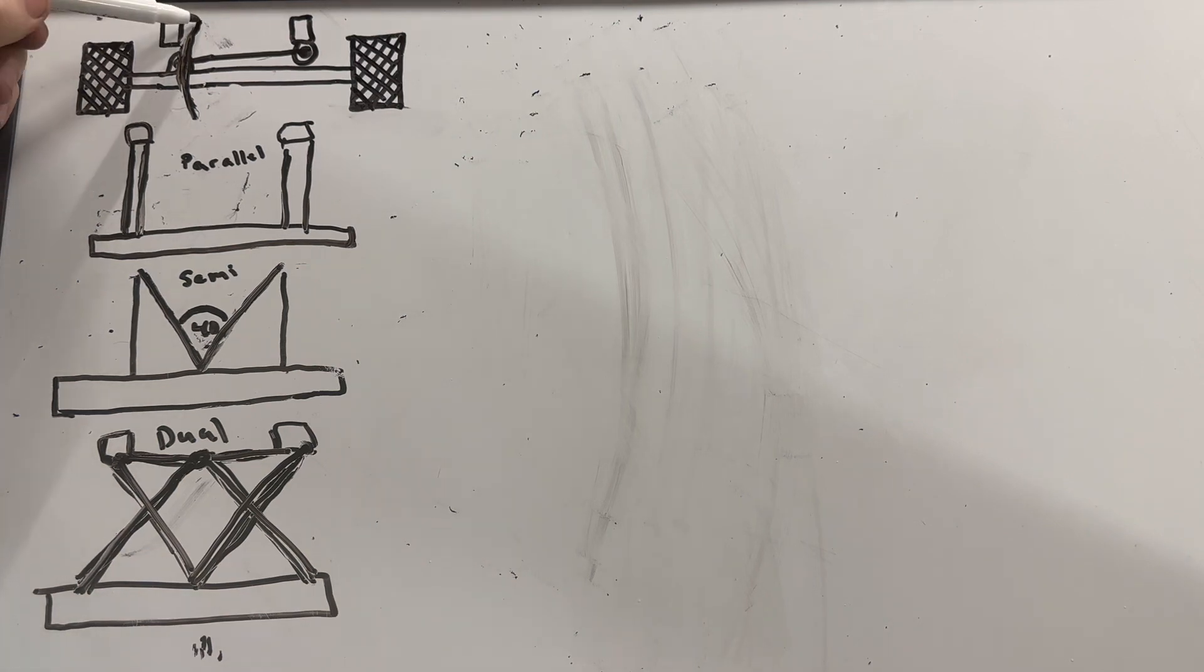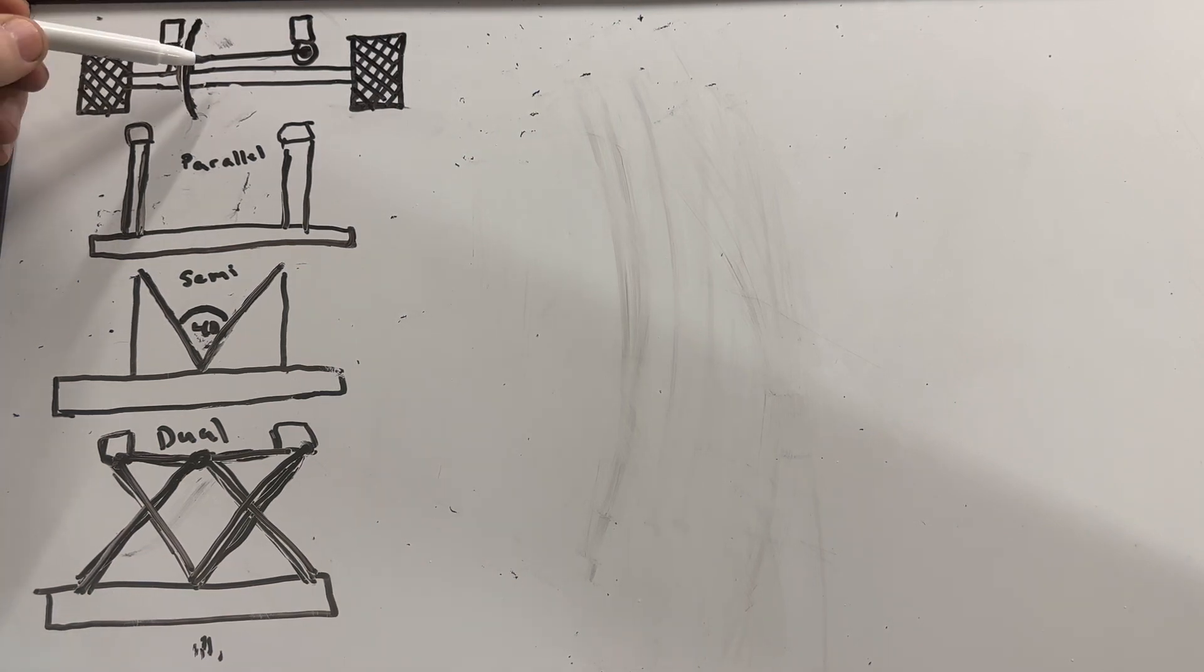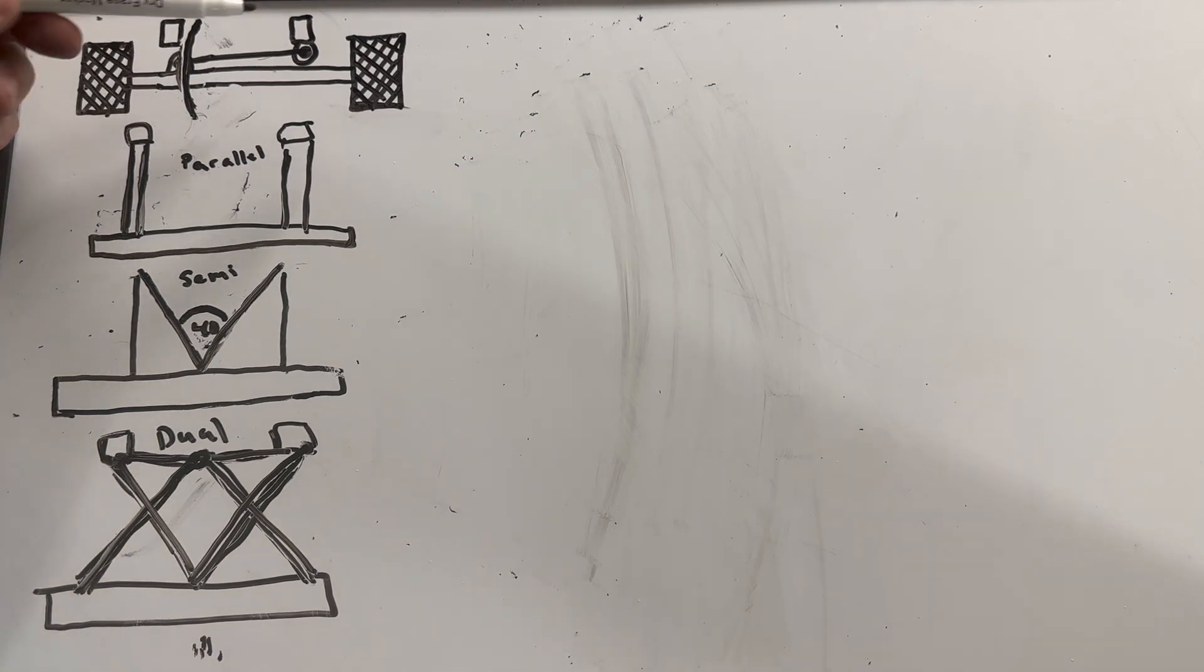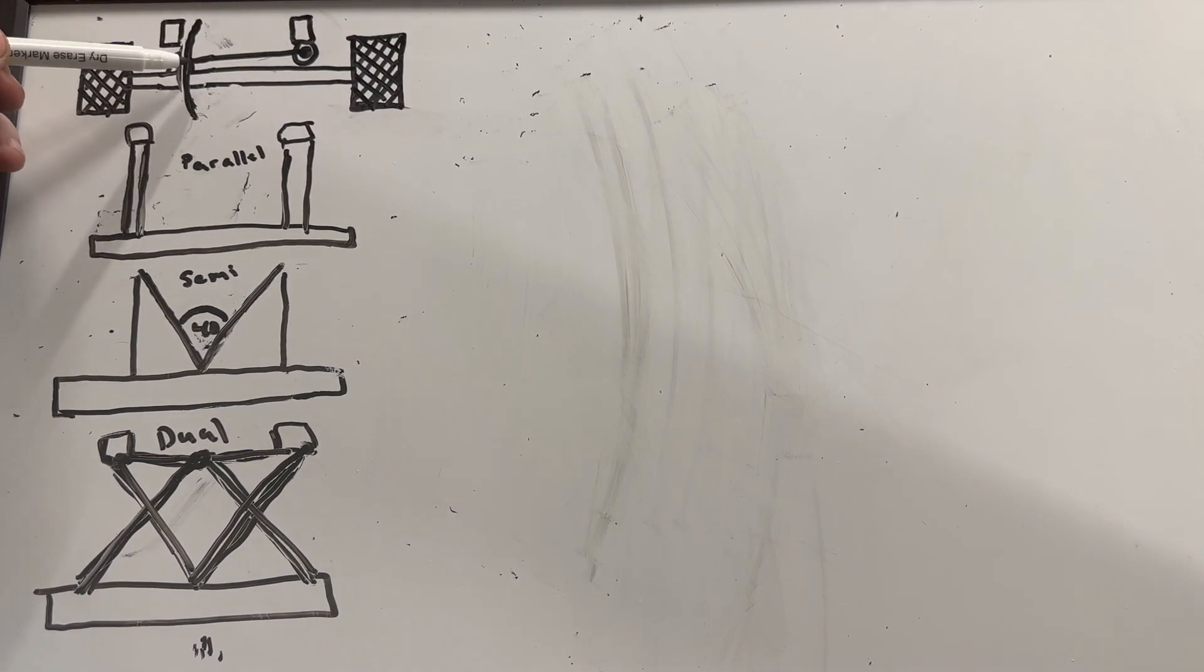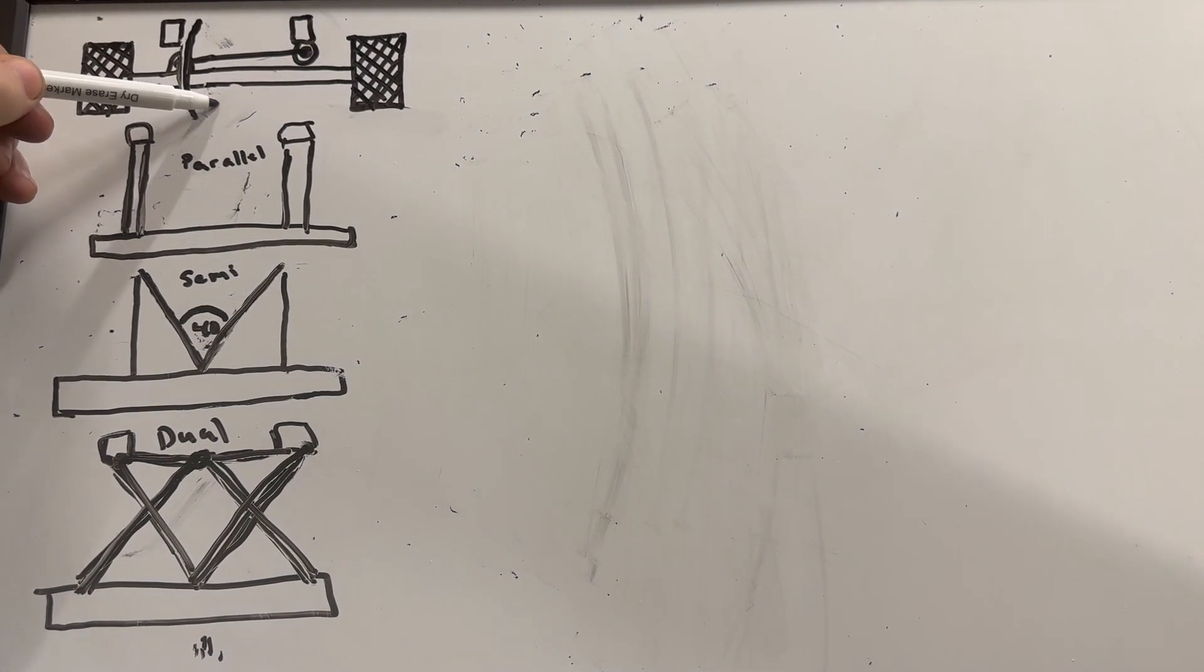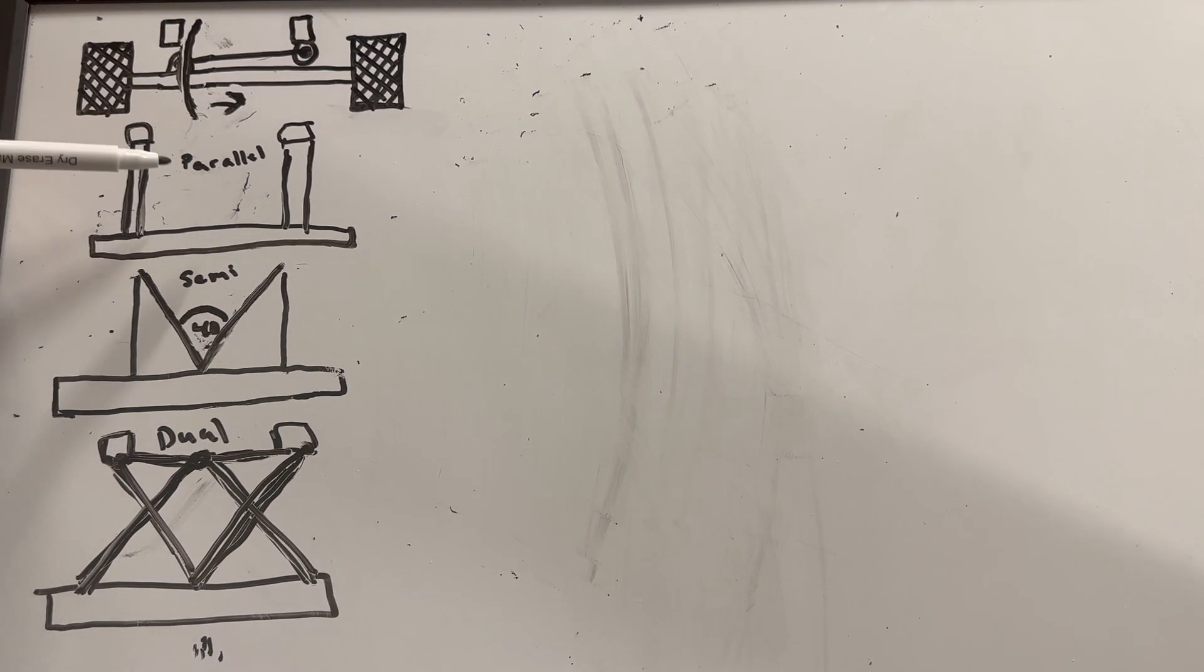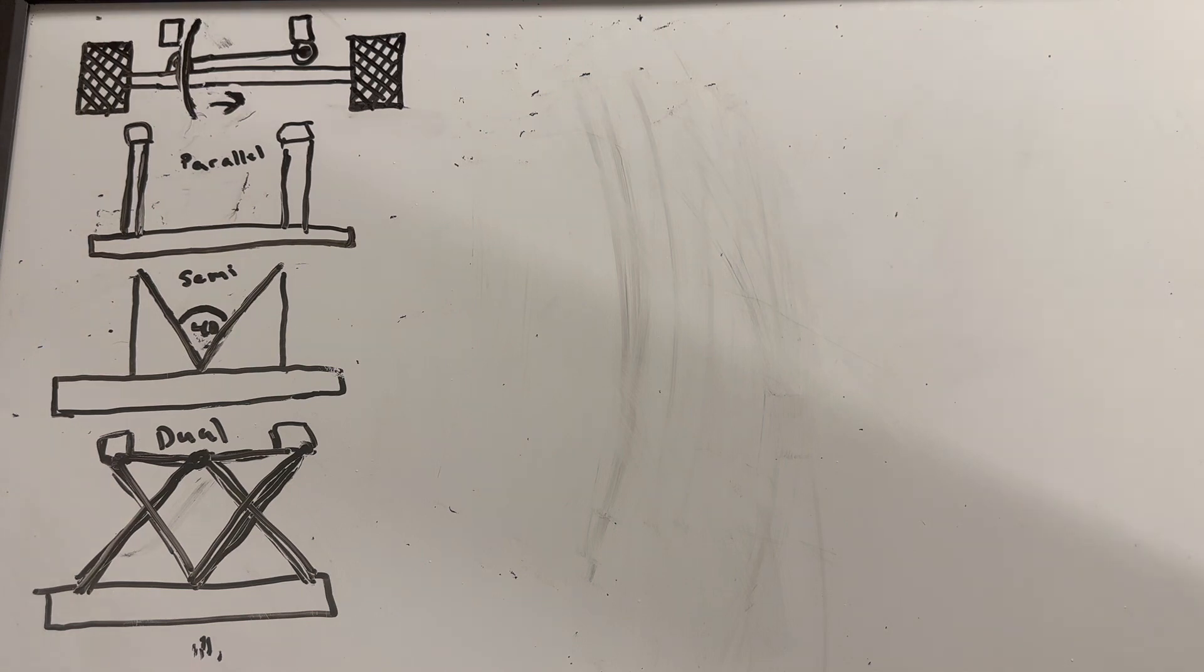Excuse my drawing, I'm not an artist, I am a much better welder. But this arc represents the swing of the axle. So a panhard bar or a track bar doesn't fight side to side movement, it controls it based off of the length. The starting point, as the axle droops it will travel over.